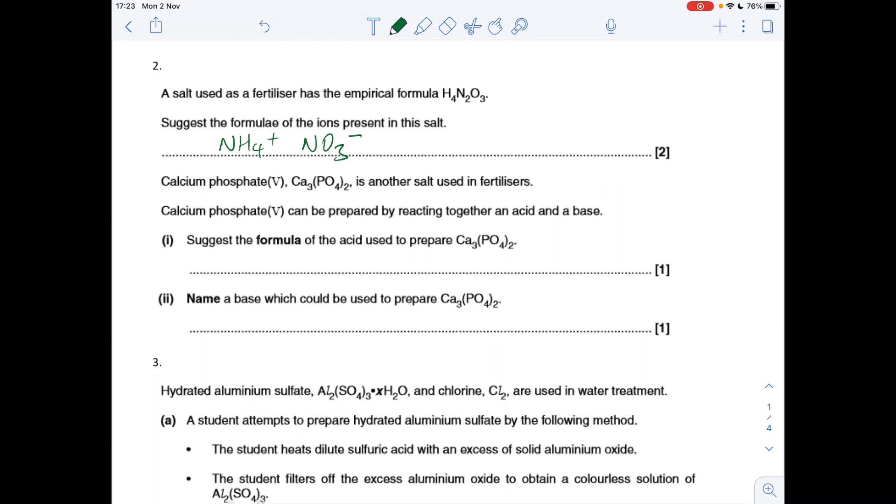Suggest the formula of the acid used to prepare calcium phosphate. The acid itself would be phosphoric acid, and the formula of phosphoric acid is H3PO4. And the second part, the name of the base that could have been used: we could have calcium oxide, calcium hydroxide, or calcium carbonate.